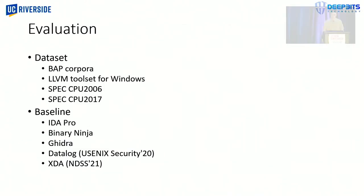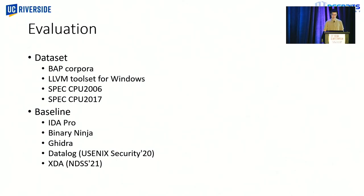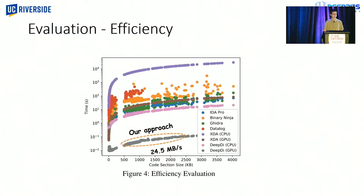And for the evaluation, our training and testing set contains binaries from these four data sets. And the binaries are compiled by various compilers and compilation options. And we compare our approach with these five tools. And they're either popular commercial tools or state-of-the-art academic papers. So first, let's talk about efficiency. Note that the y-axis is log-scale. And from this figure, we can clearly see that our approach is the fastest. And in fact, it's two orders of magnitude faster than the fastest one in baseline.